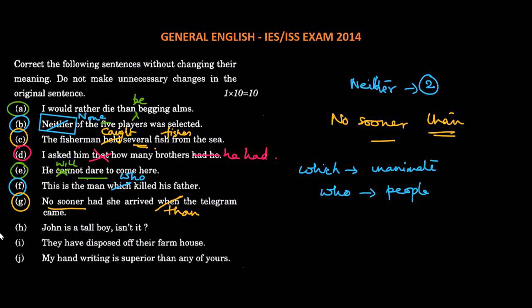Next, John is a tall boy, isn't it? Because it refers to an inanimate object. He is referring to a person. So John is a tall boy, isn't he?